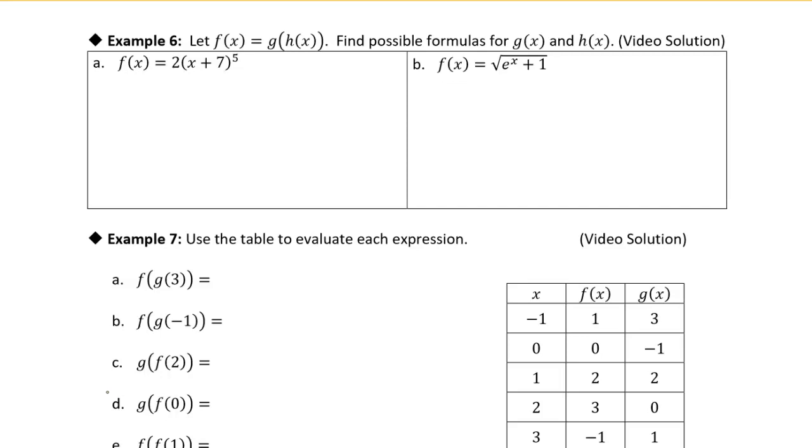So let's see what we can do with this first one. We have 2 times the quantity x plus 7, that whole quantity, to the fifth power.